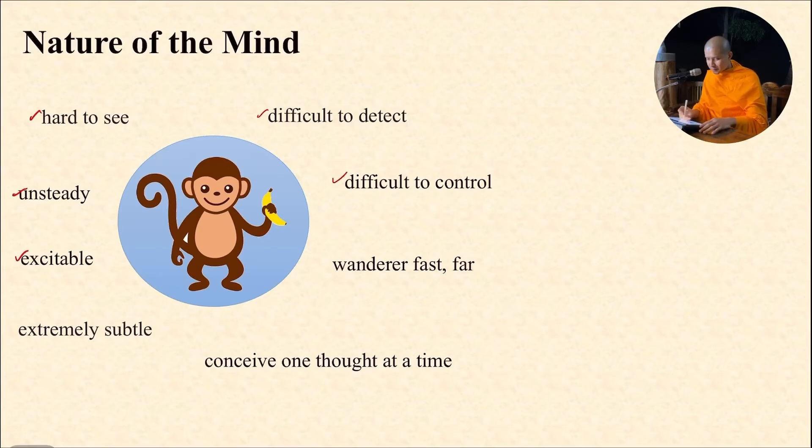Difficult to control. Stop thinking, I want to meditate, I want to calm the mind. The more you tell the mind to stop thinking, the more the mind will not stop thinking. Difficult to control. It likes to think.